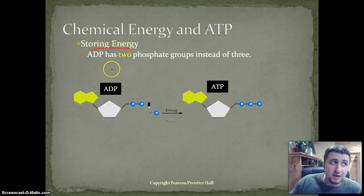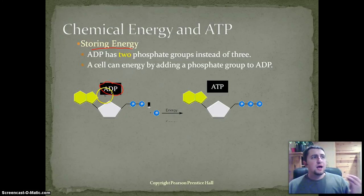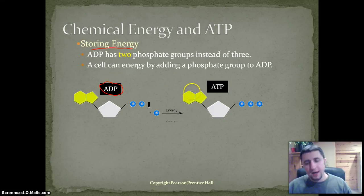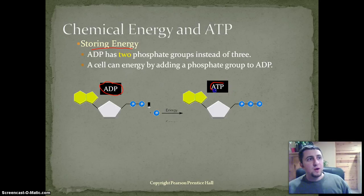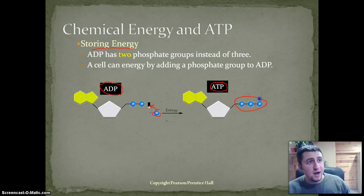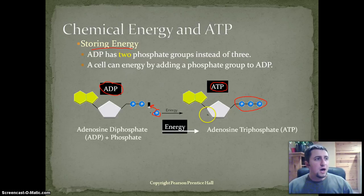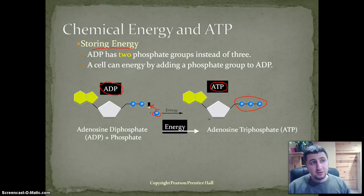ATP has three phosphate groups, but this molecule on the left is ADP — adenosine diphosphate. A cell can store energy by adding a phosphate group to ADP. When we add a phosphate group to ADP, we get adenosine triphosphate. 'Di' — think of bi, like bicycle, two wheels. 'Tri' — three. Once we add on another phosphate group, we get adenosine triphosphate, where we have three phosphate groups. That is the storage molecule for energy. It doesn't store a whole lot of energy, but that is what our cells use for energy. Adenosine diphosphate is like a battery that's not charged all the way, and when you charge it up, you get ATP — a battery that's fully charged. ATP is a storage unit for energy.